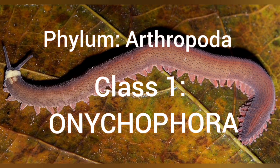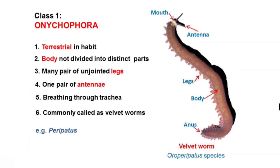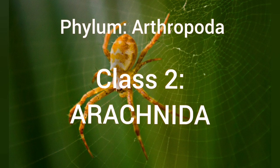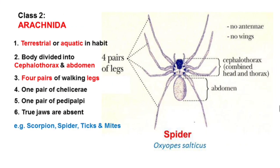Class 1 is Onycophora. Animals belonging to Onycophora are terrestrial in habit. The body is not divided into distinct parts. They have many pairs of unjointed legs, hence they are close relatives of Arthropoda. They have one pair of antennae, and breathing occurs through trachea. They are commonly called velvet worms. An example is the Peripatus species.